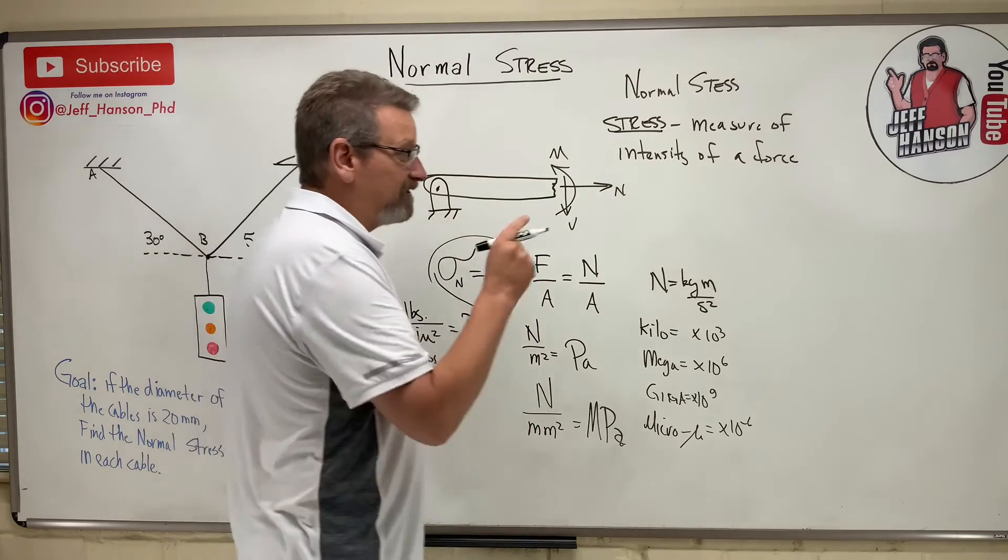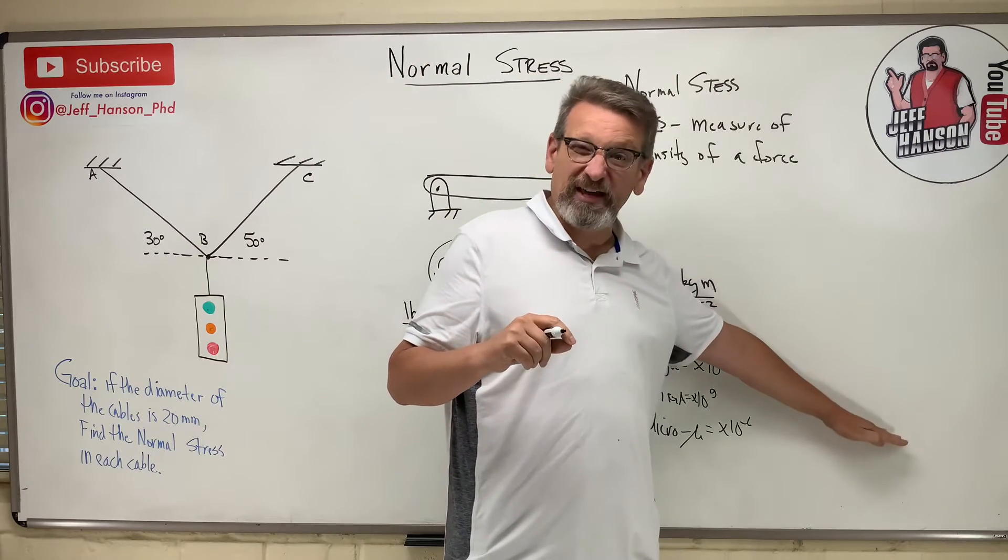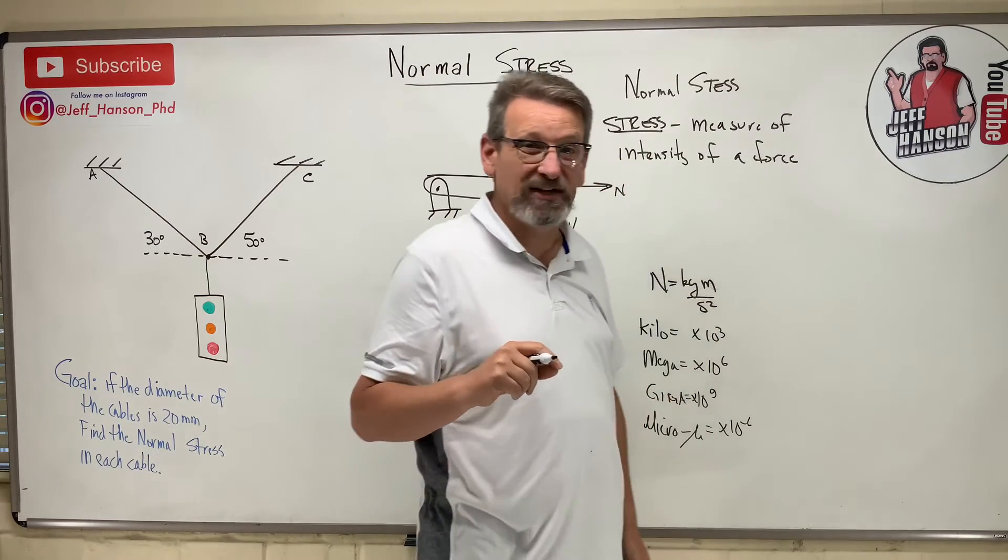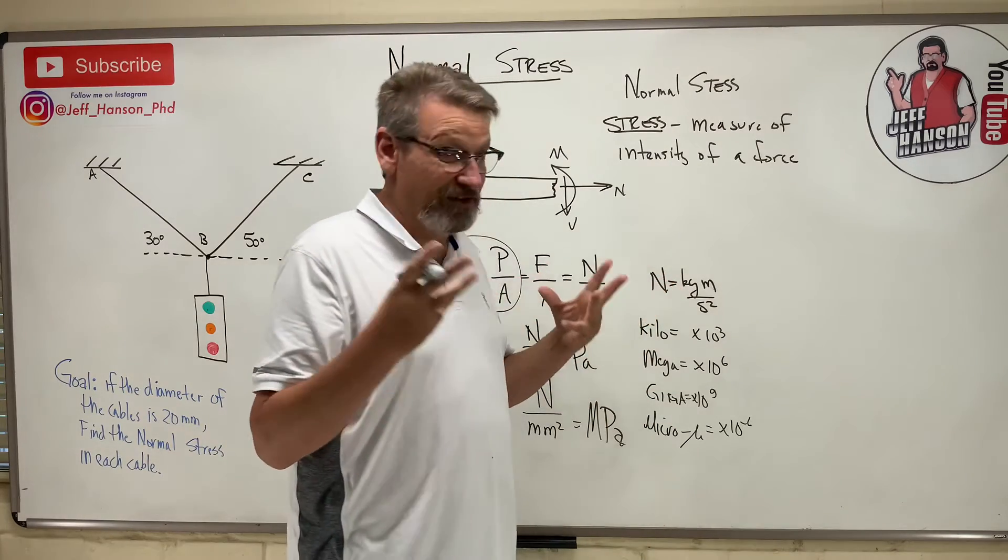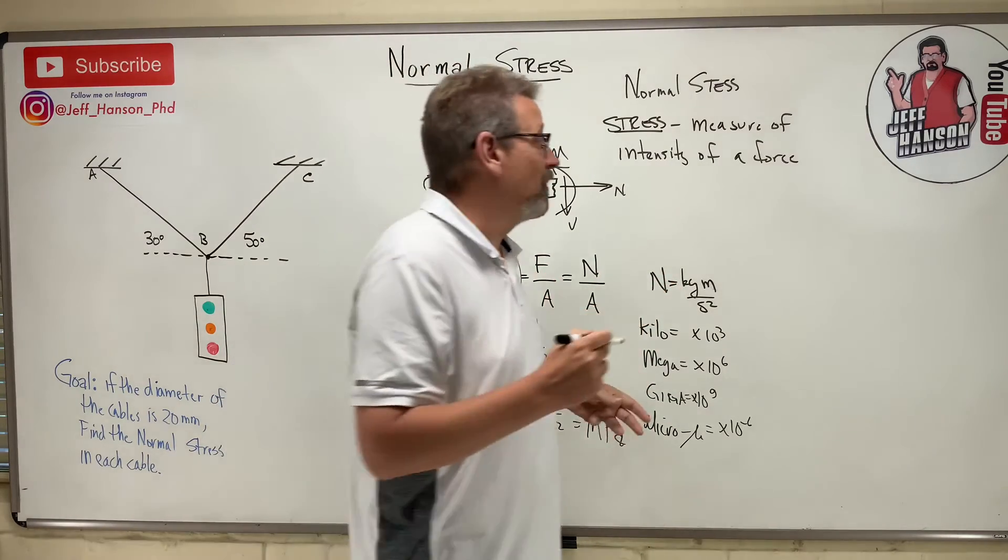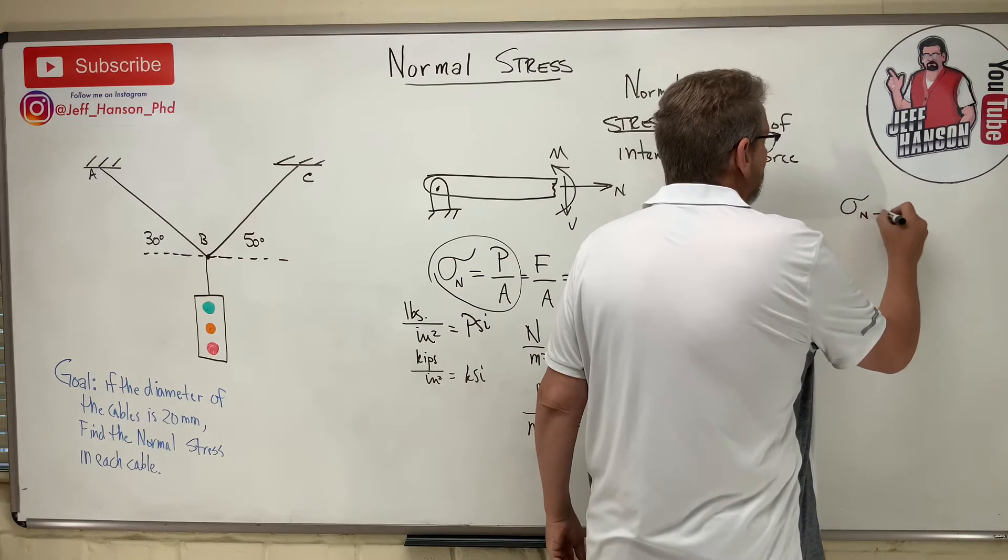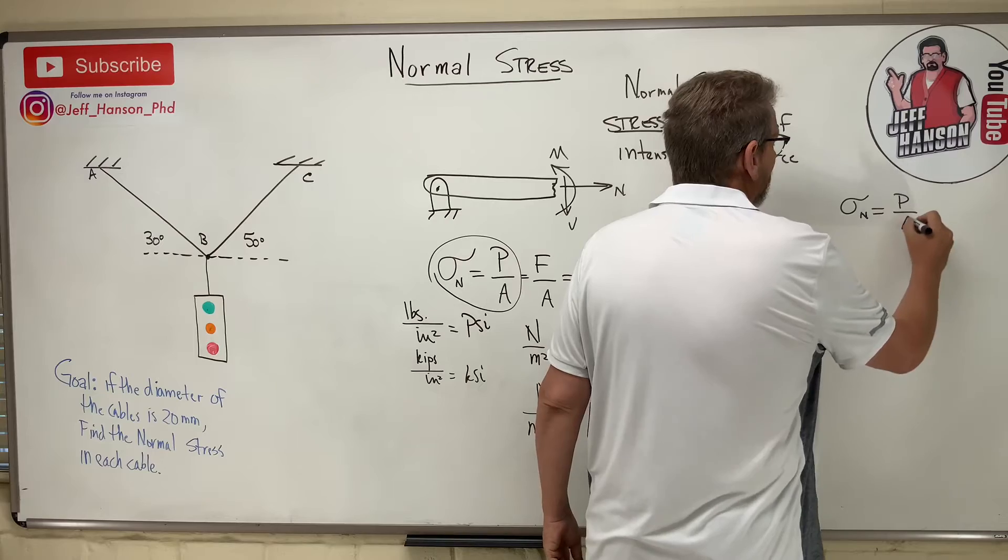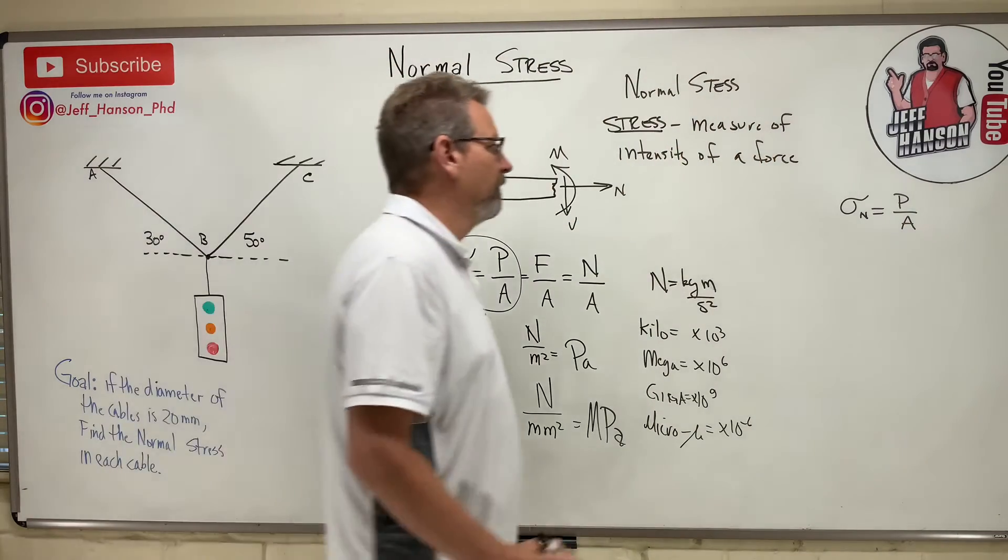So that's stress, normal stress, the intensity of the force, and this is the equation that we use right here. I'm going to put this over here because as we go along I'm going to start adding equations over here. I'm going to keep a little running equation sheet that we're using in solids. Because in statics we made up our own equations, but in solids there are a lot of equations, and so this is going to be our first one: sigma normal is equal to P over A, normal stress.